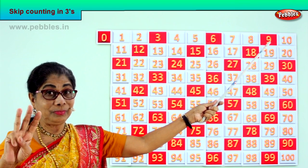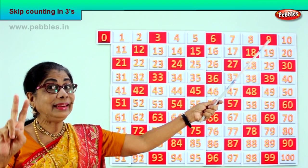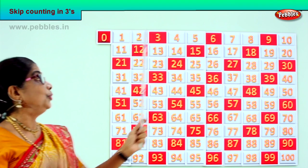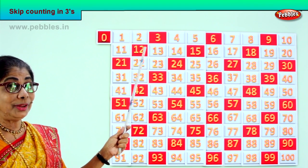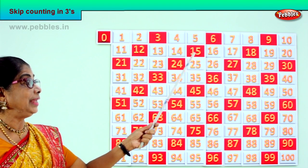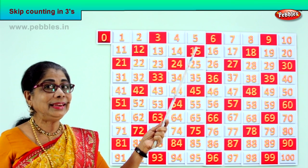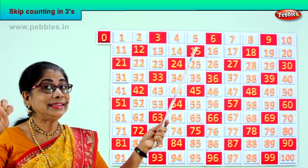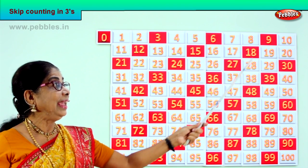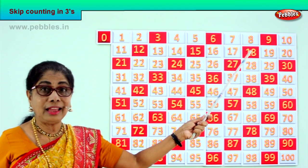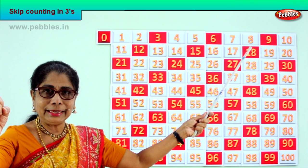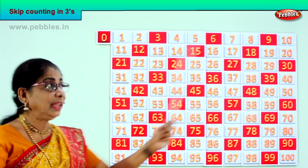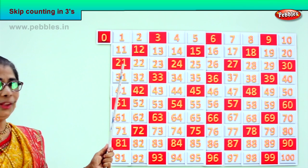After 9 — 10, 11, 12. After 12 — 13, 14, 15. After 15 — 16, 17, 18. After 18 — 19, 20, 21.